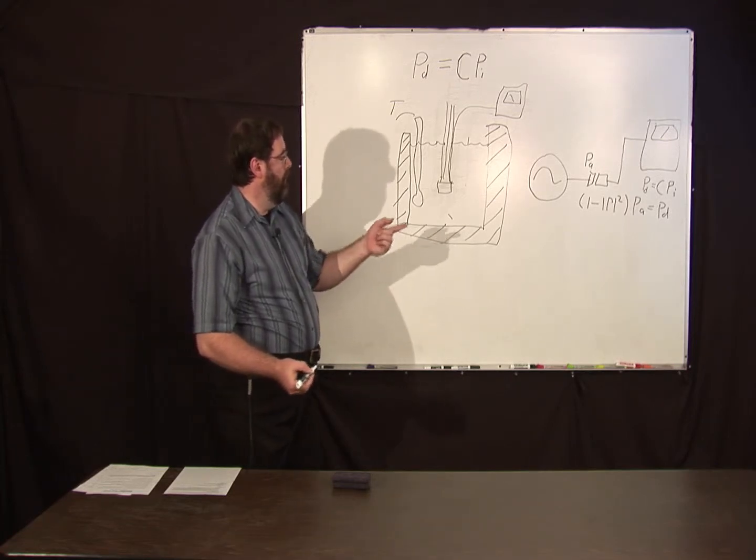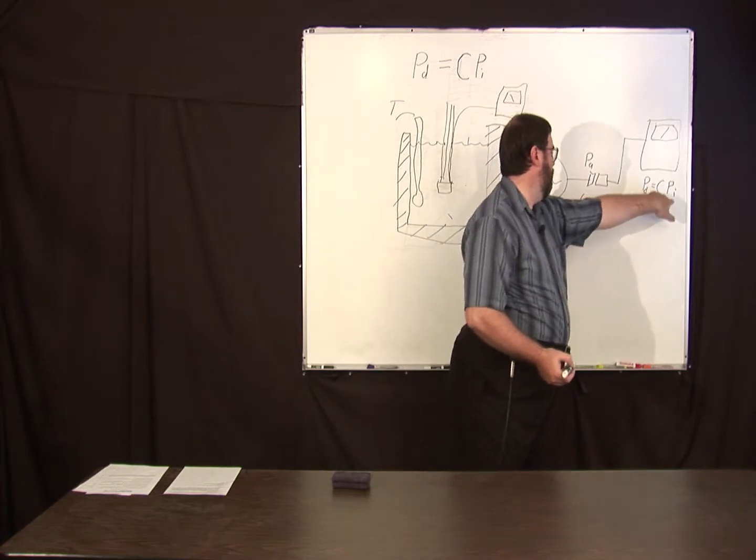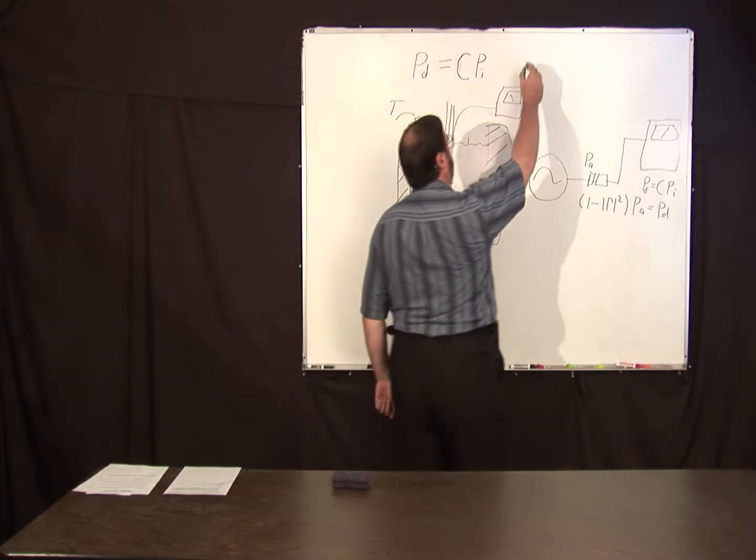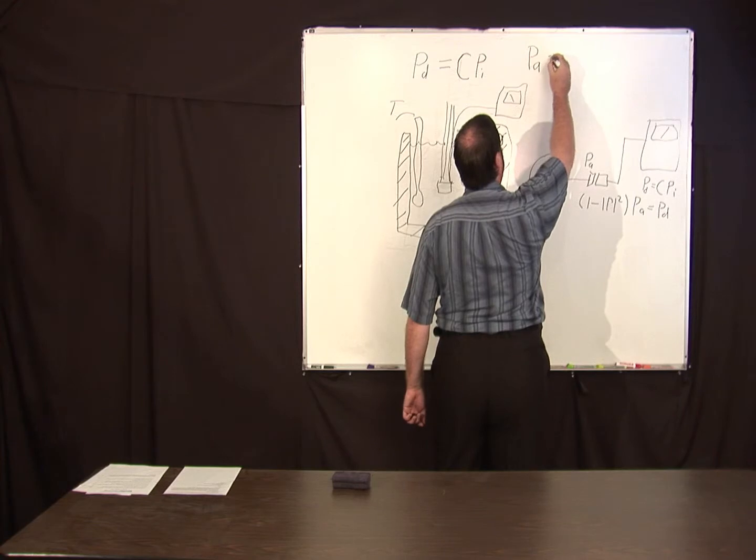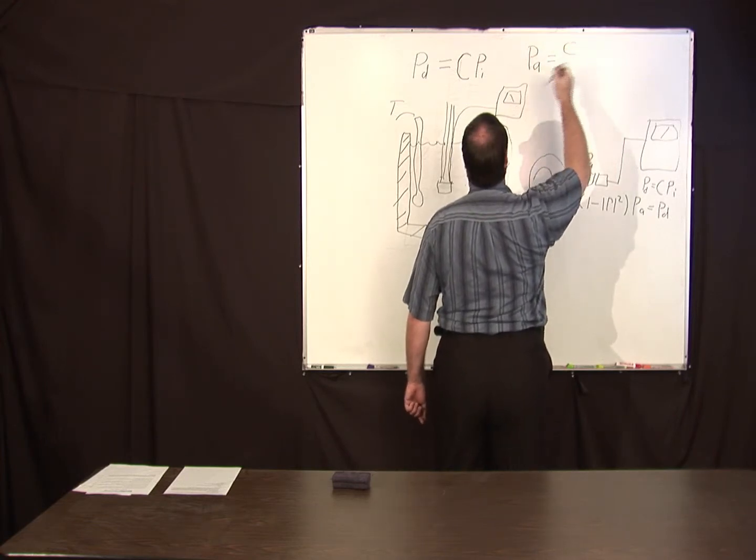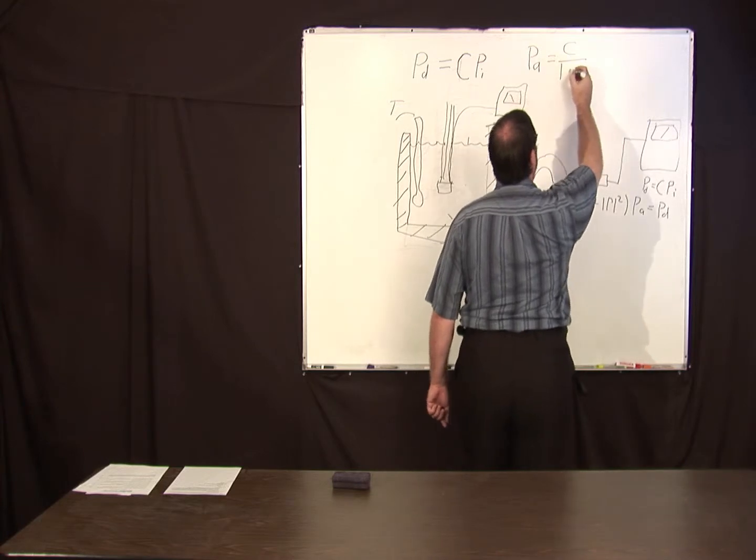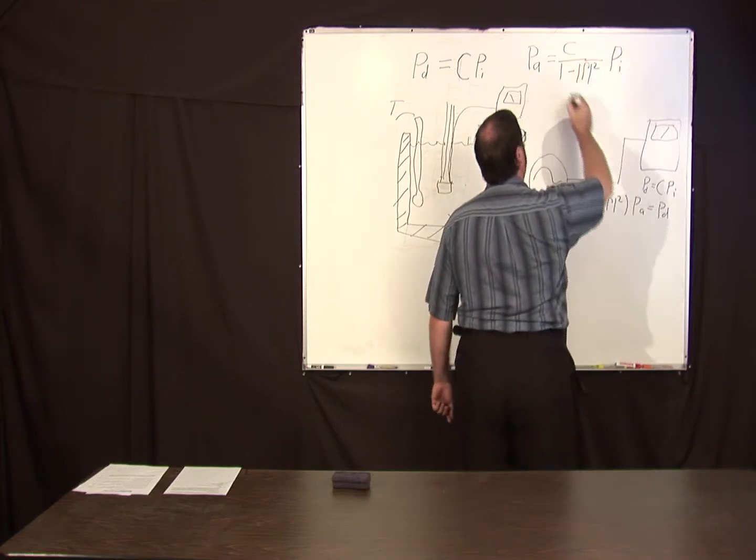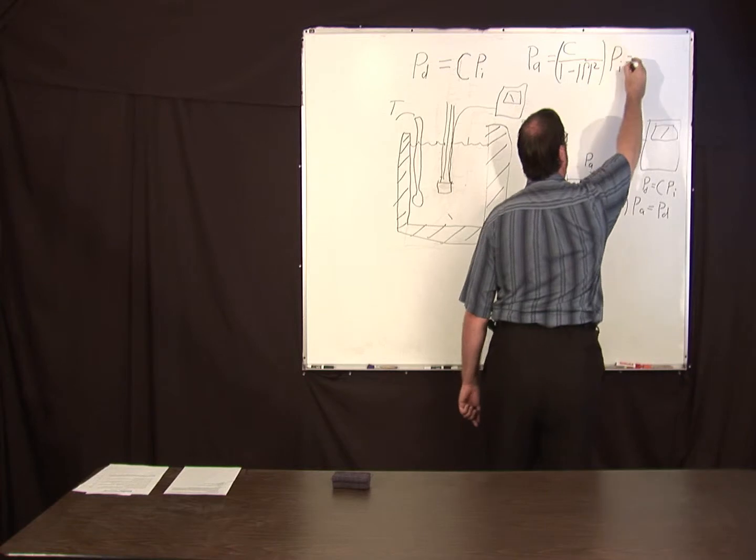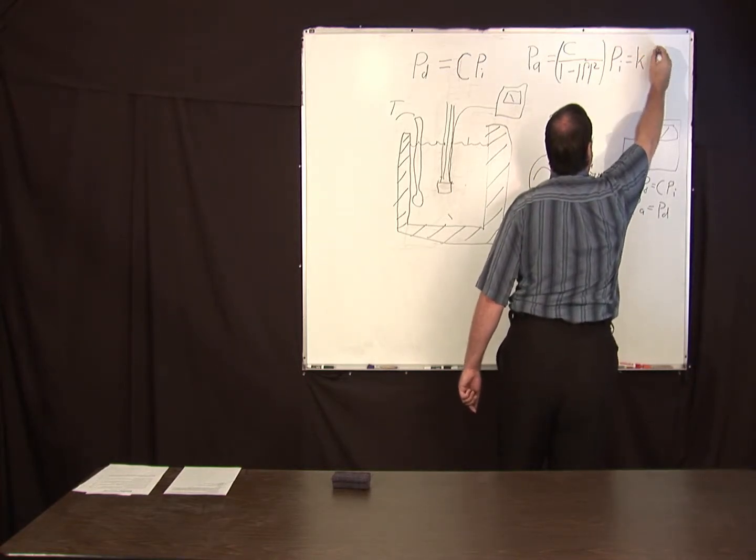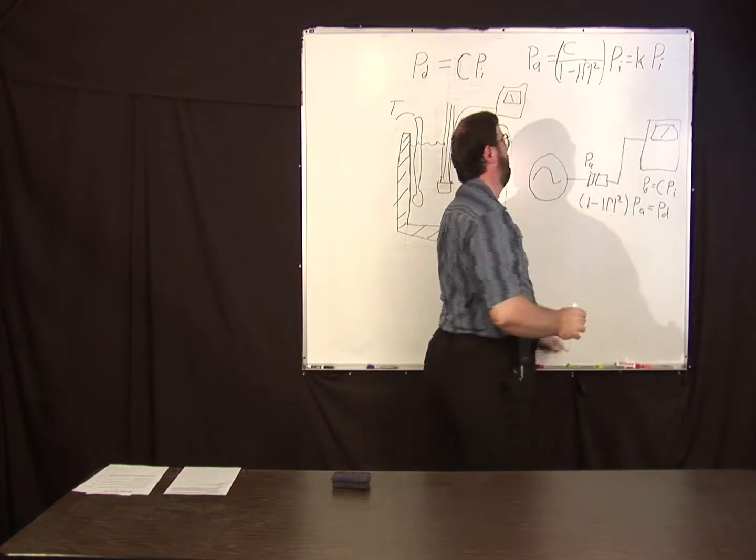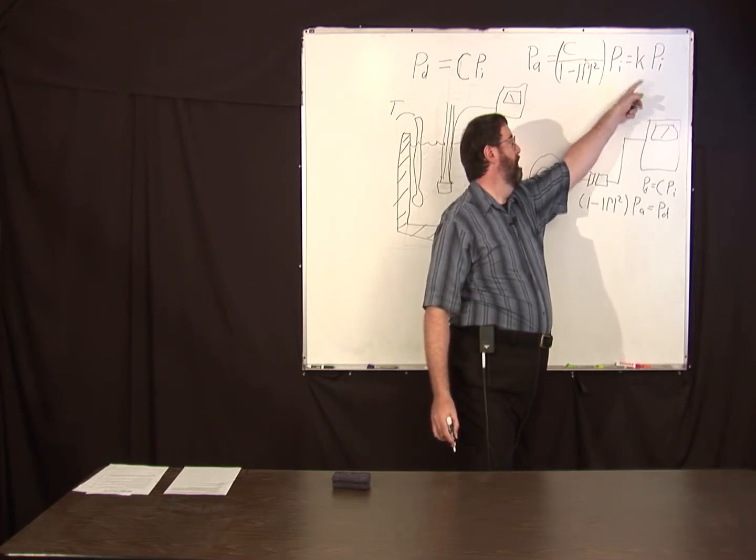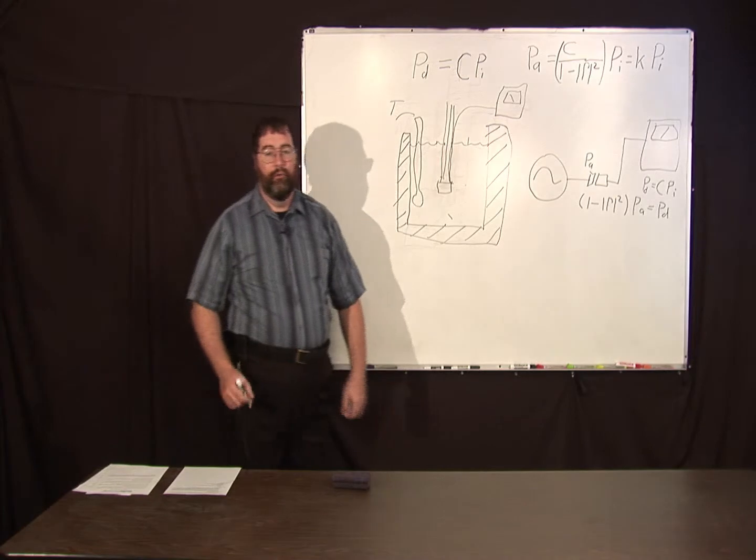So how do you do that? There is this correction. The power actually delivered to the power sensor is going to be 1 minus gamma reflection coefficient squared times the available power. That's equal to the power delivered. So if you put that in there, we come to the conclusion that the available power equals this constant we got from calorimetry, divided by 1 minus the reflection coefficient squared times the indicated power. This thing here, we'll just call that K. This K is basically related to the calibration factor that you'll see on most power sensors.